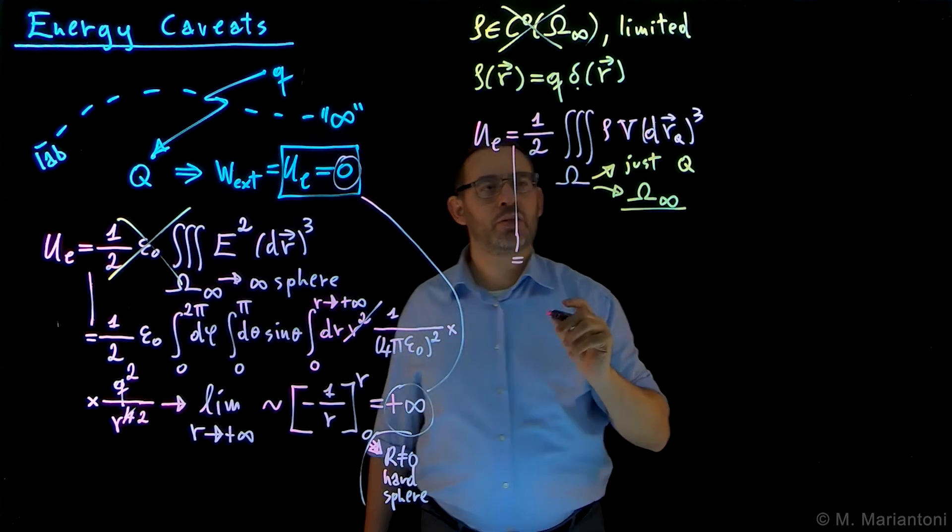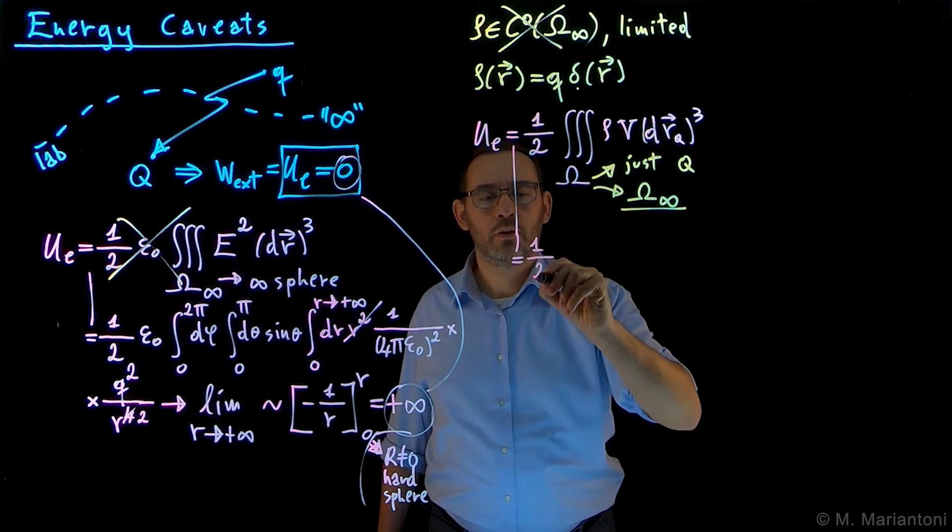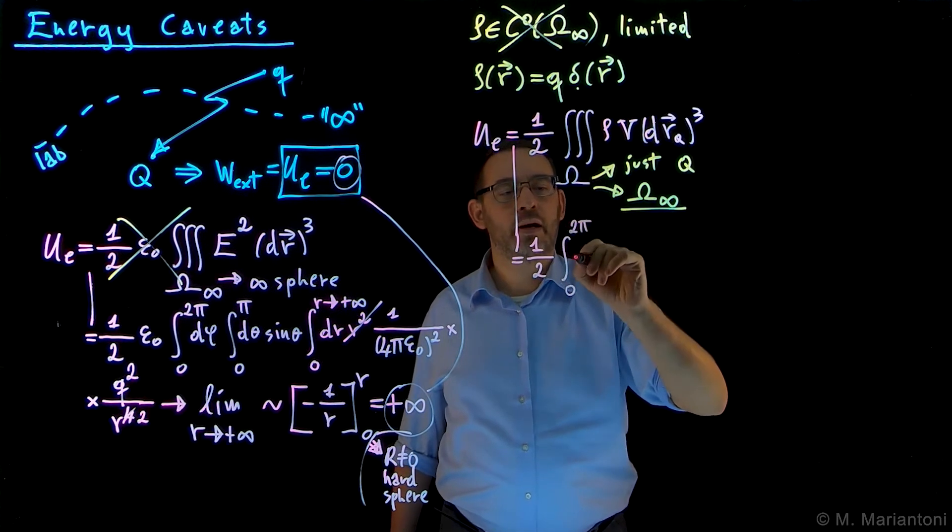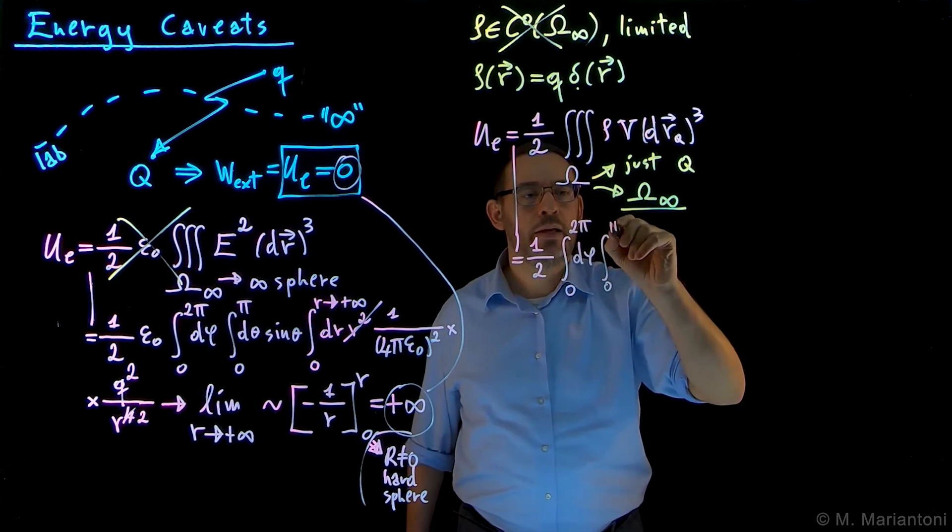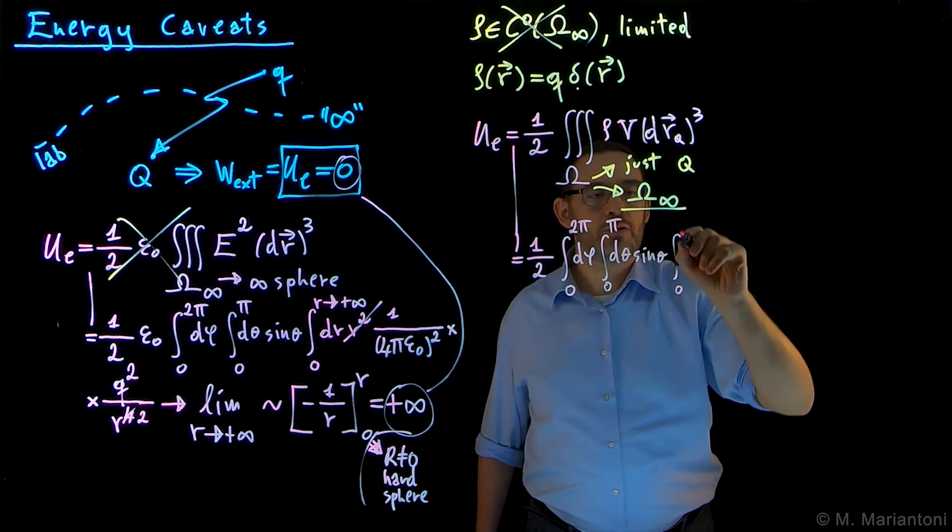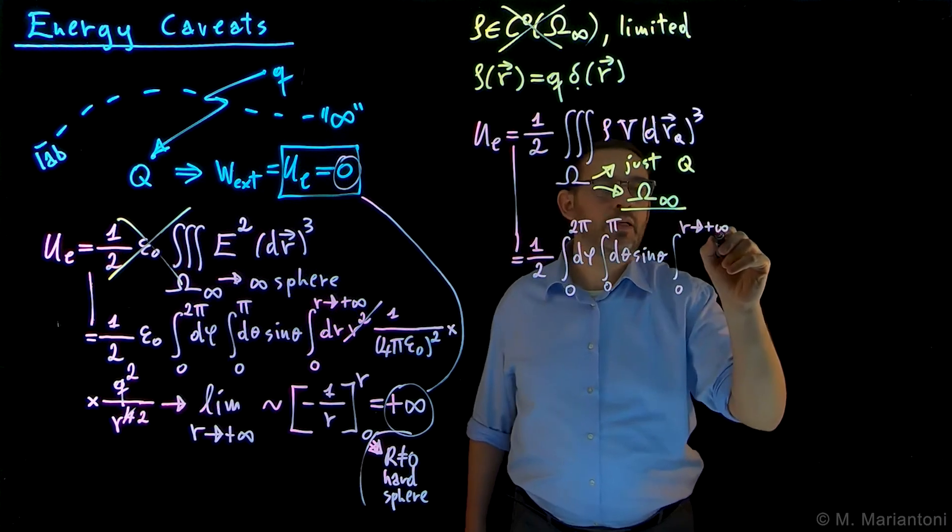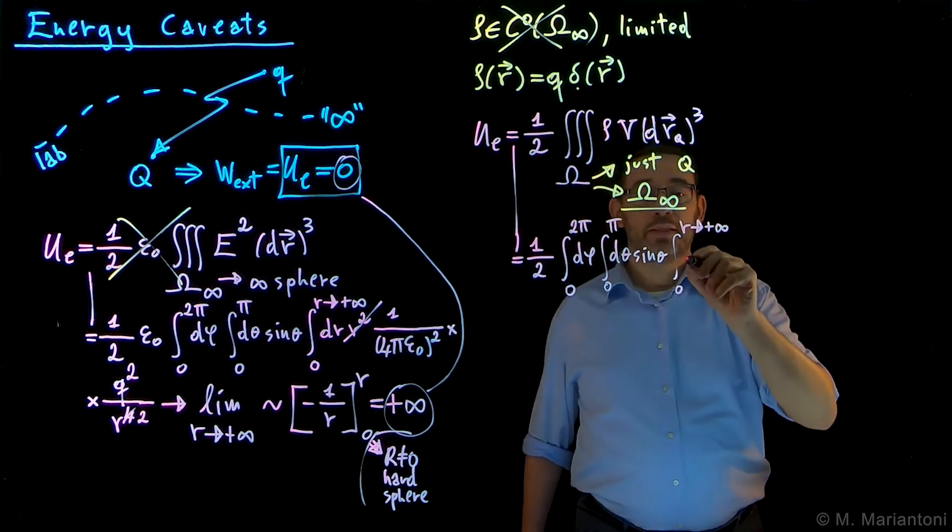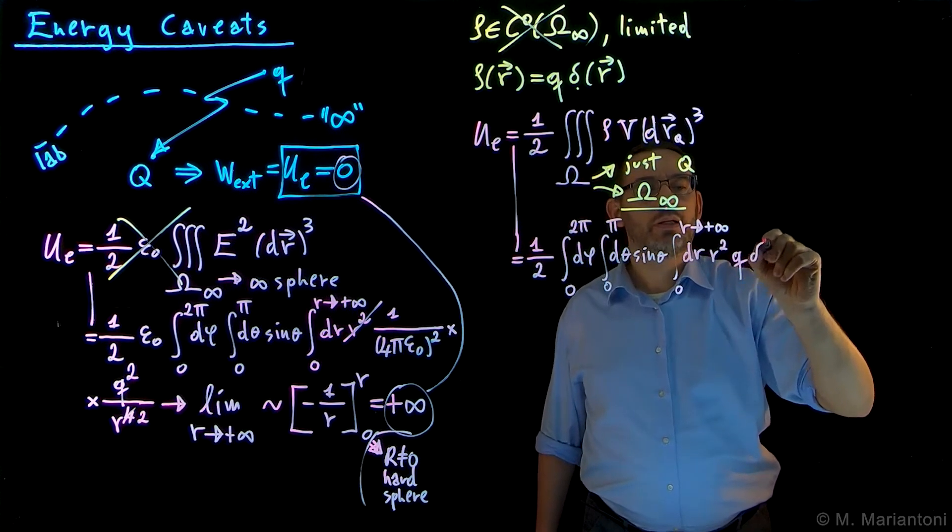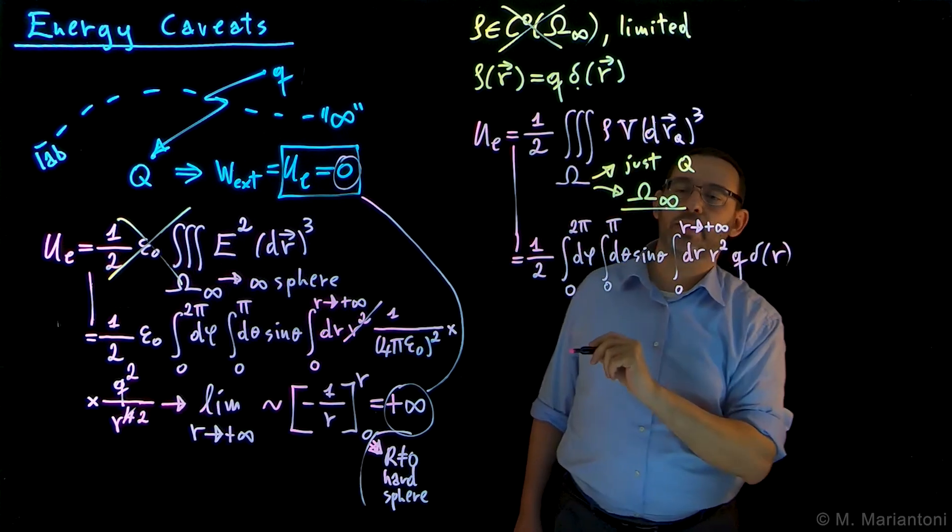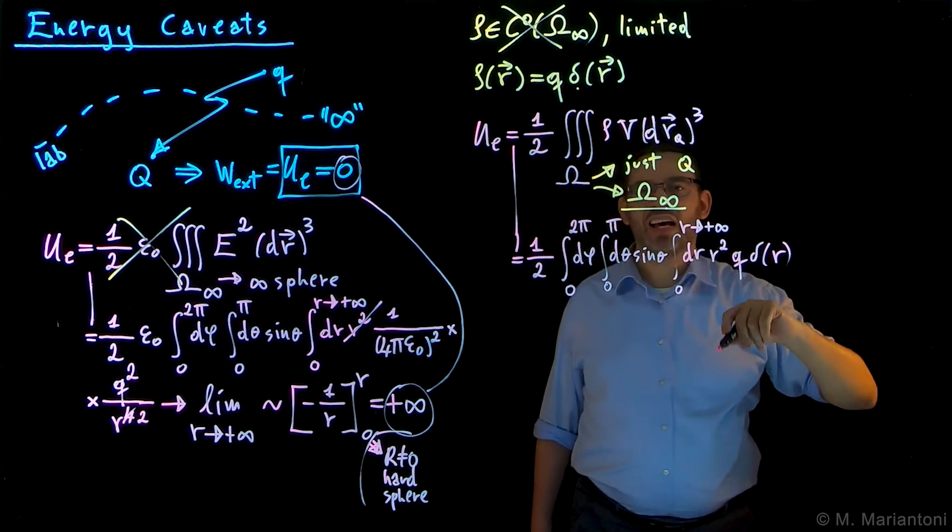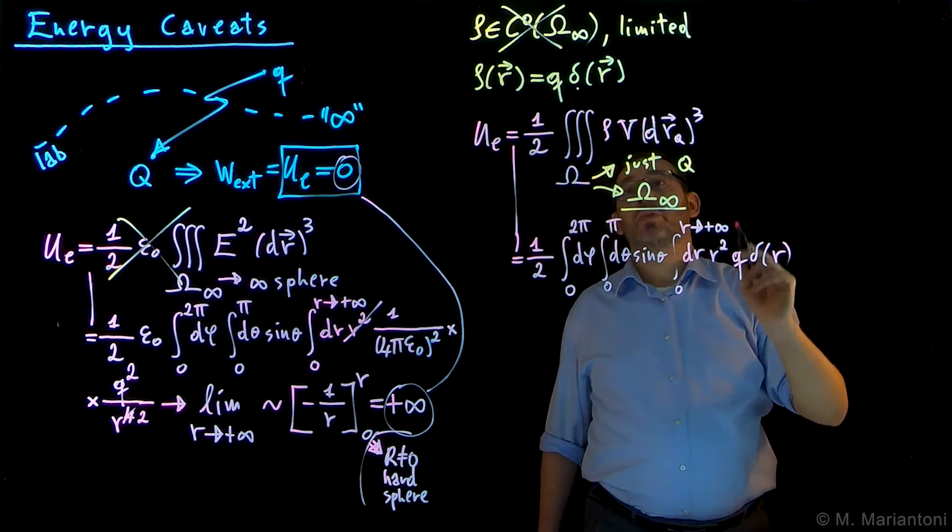So here we just write this as the volume integral. We need to go from zero to 2π in dφ, the usual things. Integral from zero to π, dθ sinθ. Integral from zero to R, which eventually we push to plus infinite to obtain omega infinite, dR, R squared, as always. Now we need Rho. What is Rho? Rho is Q delta of R. And what about R in a spherical coordinate system? This becomes just a single R here without vector, because we are already in a spherical coordinate system. So this is our Rho.